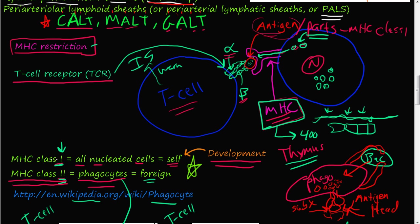The take-home idea was that you have two classes — class 1 and class 2 major histocompatibility complexes. Class 1 is found on all nucleated cells. Phagocytes — you can go to Wikipedia to get a full list of all cells considered phagocytes — consume bacteria, microbes, or foreign objects; they eat them and then destroy them.